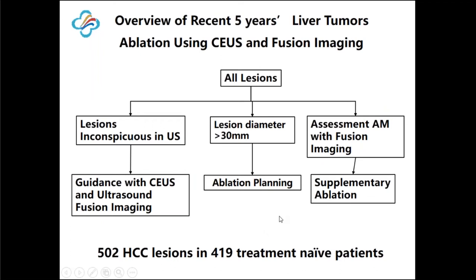Here is our five-year experience using CEUS and fusion imaging in the ablation treatment of liver tumors. For lesions inconspicuous on ultrasound, we use CEUS and fusion imaging. For lesions larger than three centimeters, we use planning. After ablation, we use fusion imaging and CEUS to evaluate the result. If unachieved ablation is detected, we do supplementary ablation to correct the unachieved ablative margin.